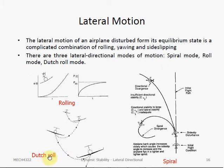The dutch roll mode is characterized by a coupled lateral directional oscillation. It is a concurrent oscillation in all 3 variables: rolling, yawing and side slipping. The rolling and yawing oscillations are actually out of phase. The motion starts with a sideslip perturbation, then the aircraft begins to oscillate in roll, starts to yaw, and then rolls and yaws again, all in desynchronized motion.